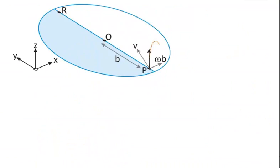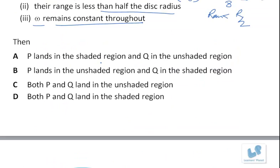So let us look at the four options. P lands in the unshaded region and Q lands in the unshaded region. This is correct. Rest all four will not be correct.